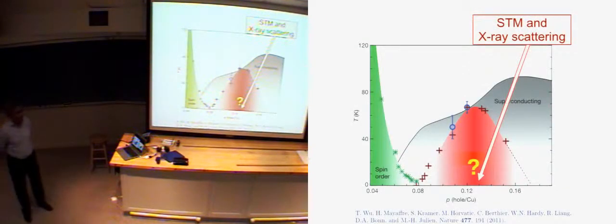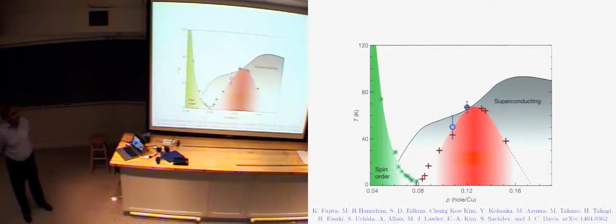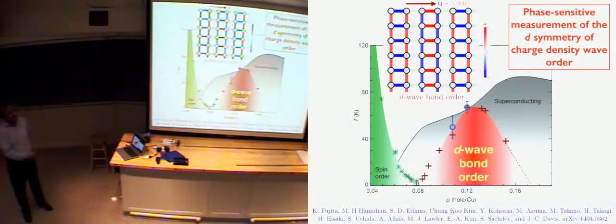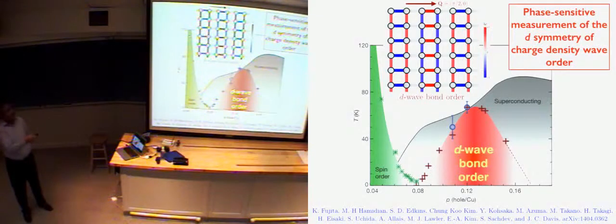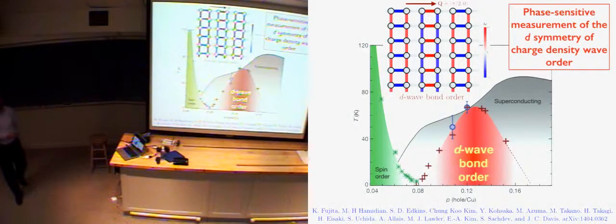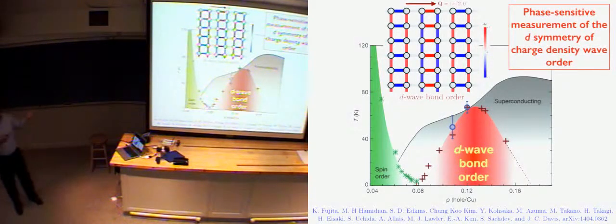So this is the main conclusion: through STM and X-ray scattering, we have now pretty convincing evidence that the order parameter here is this structure — the density wave on the oxygen sites with a pi phase shift between X and Y. The very clear experimental evidence tells us this is the correct description.